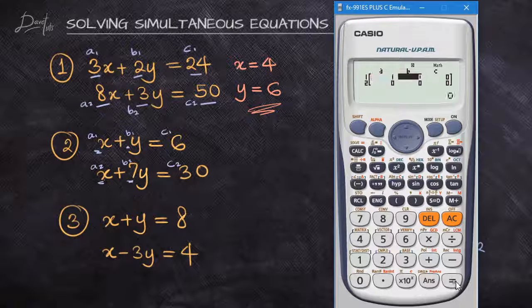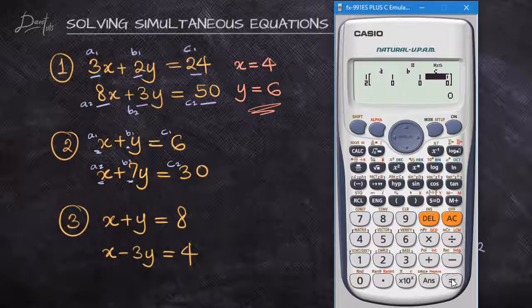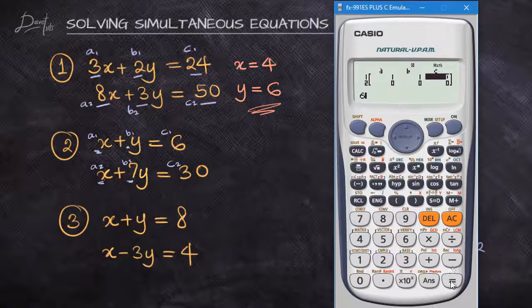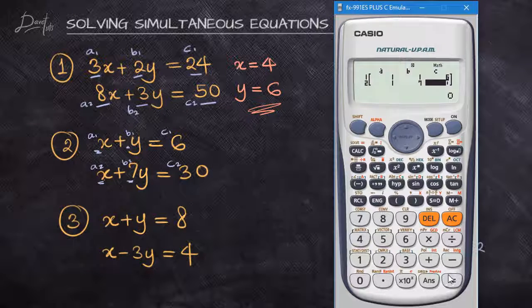Here, a₁ will be 1, b₁ is 1, c₁ is 6, and a₂ is 1, b₂ is 7, and c₂ is 30.